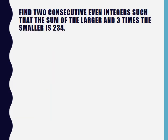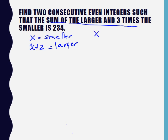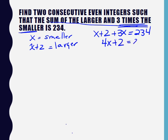Now we want to find two consecutive even integers such that the sum of the larger and 3 times the smaller is 234. So two consecutive even, so X and X plus 2. This would be the smaller, because if I add 2 it makes it bigger, so this would be the larger. So the larger is X plus 2, and 3 times the smaller is 3X, so X plus 2 plus 3X equals 234. Combining my like terms, I get 4X plus 2 equals 234.